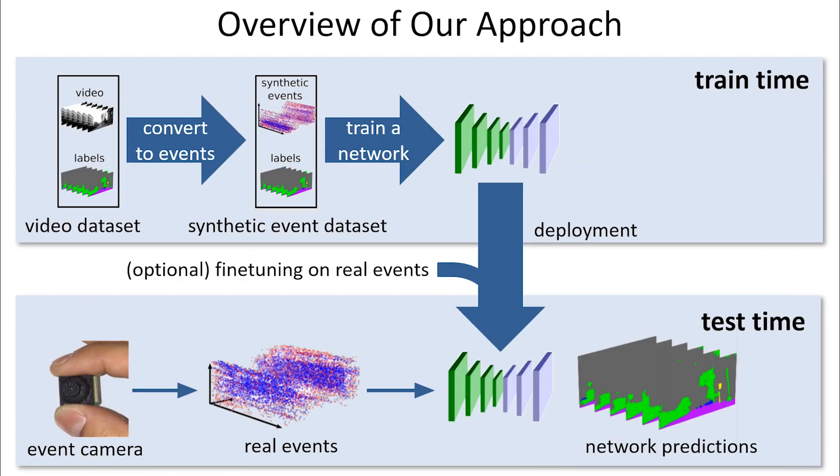The proposed method converts video datasets to event datasets which can be used to train a neural network. These networks can be deployed on real event data.